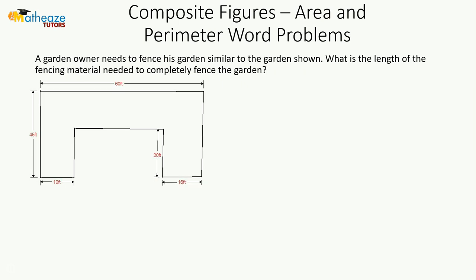Final example: a garden owner needs to fence a garden. What is the length of fencing material needed to completely fence it? Since we're fencing, we're looking at perimeter — the distance around. We add up all the lengths: this side is 45, this is 20, this is 16, this is also 20, and then 60. Then 10 plus 16 is 26, so this side is 34.